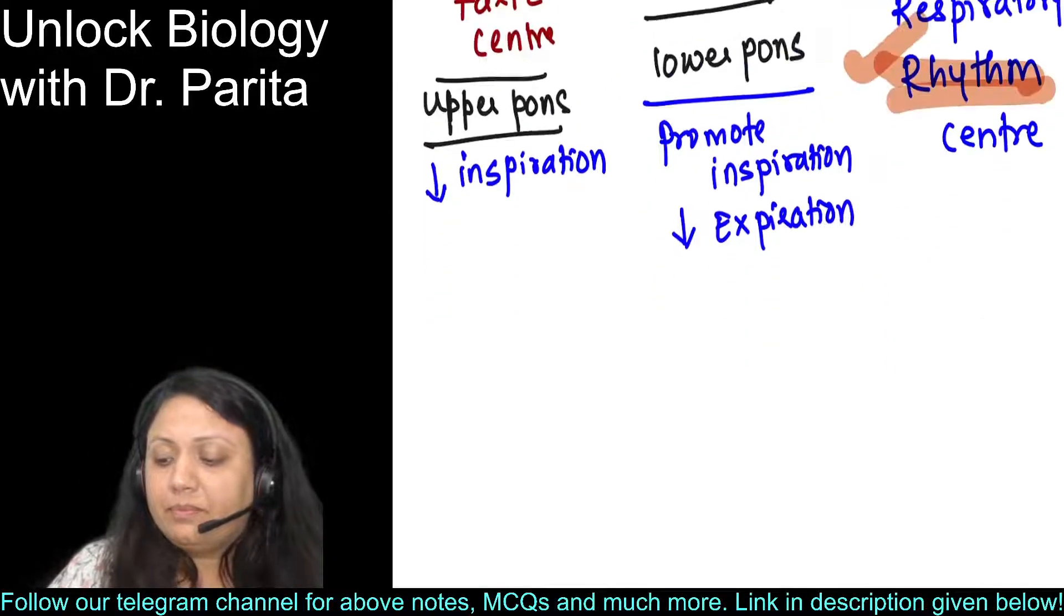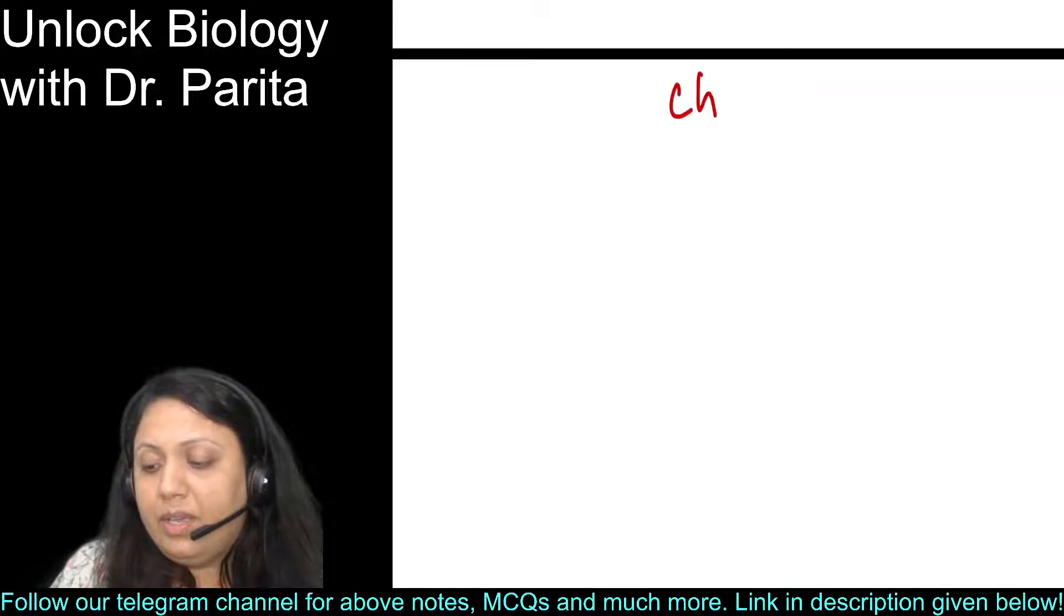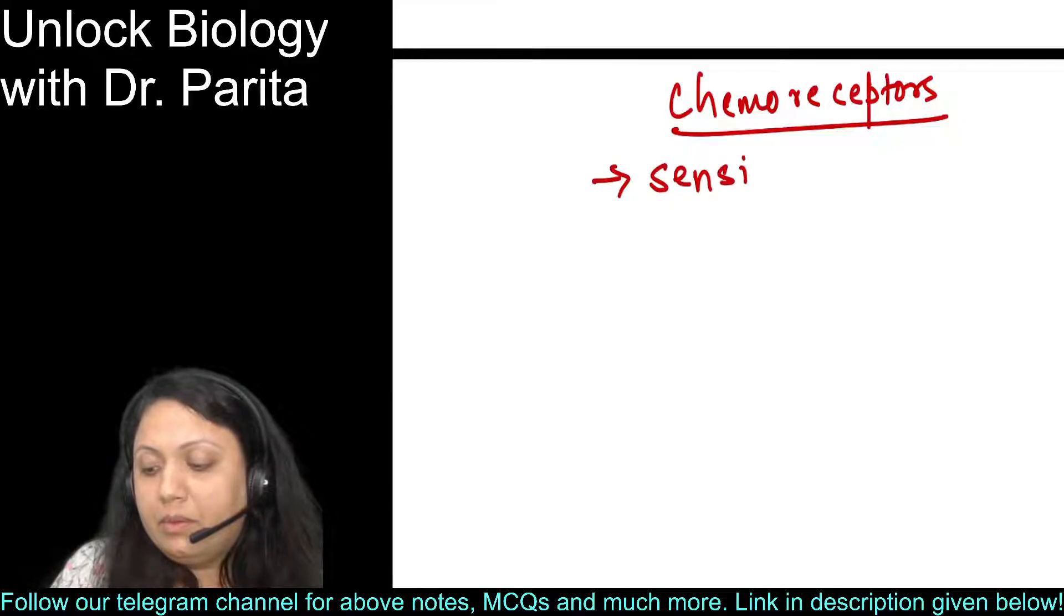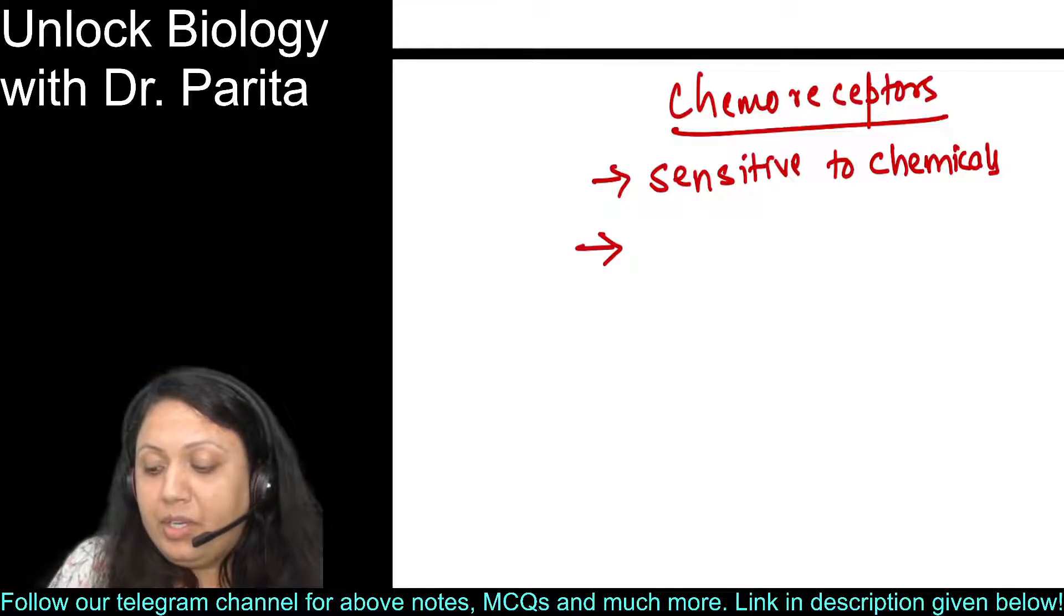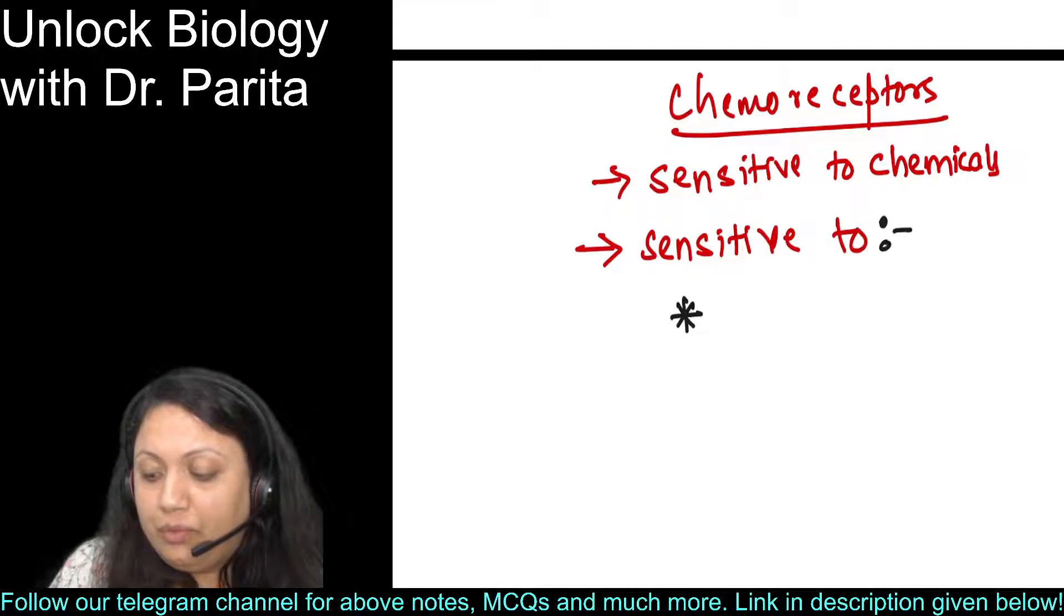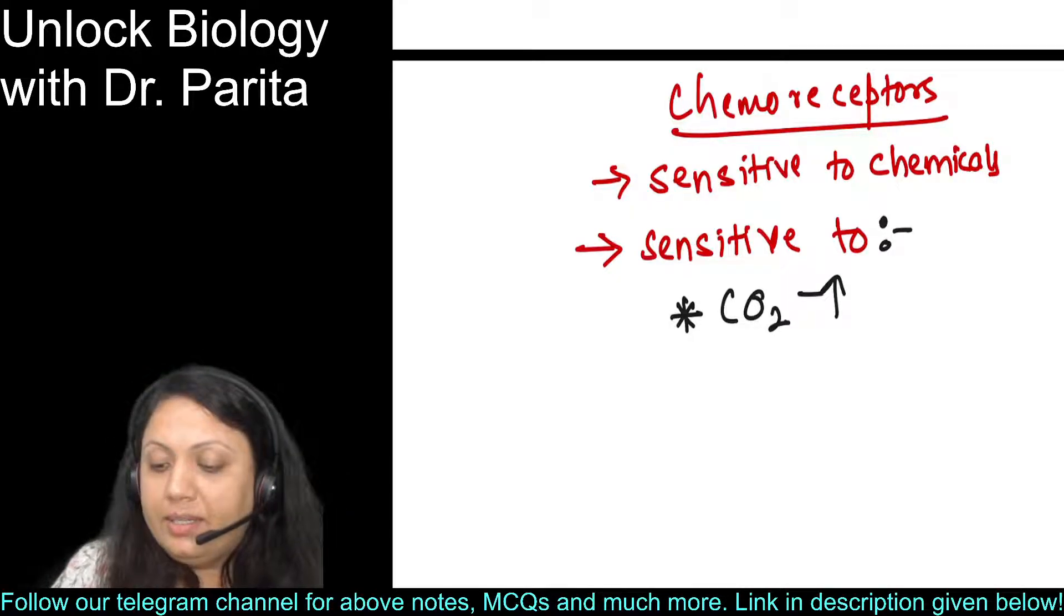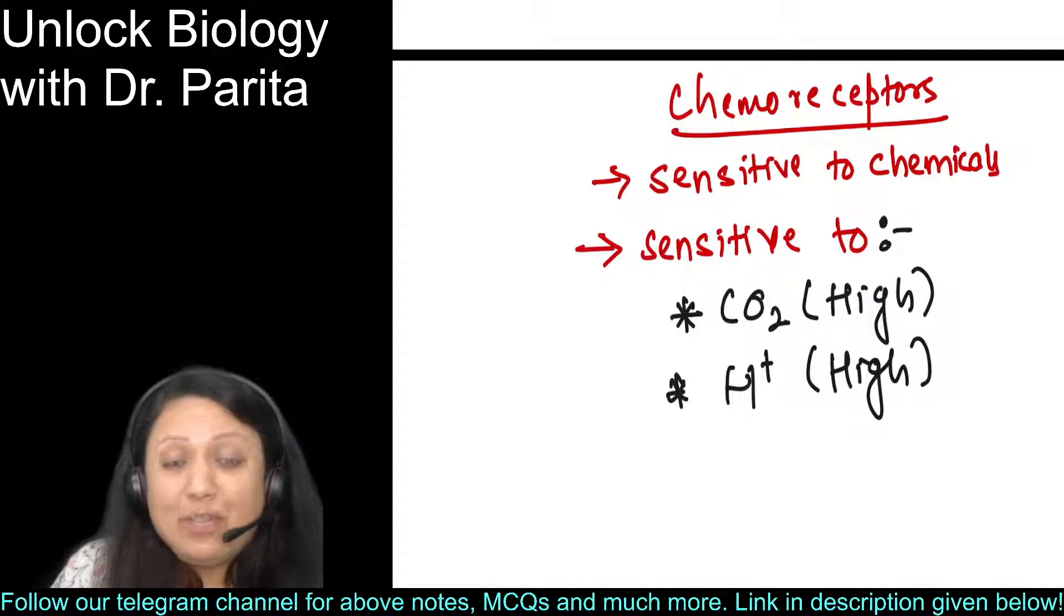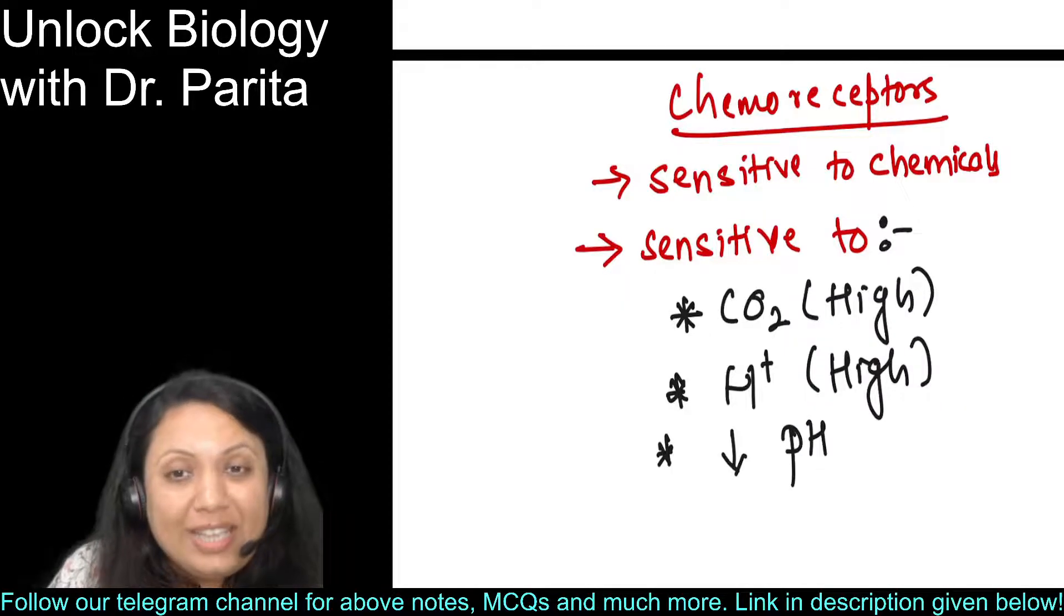After this, we come to chemical control or chemoreceptors. Why is this called chemoreceptors? Because it is sensitive to chemicals. Especially, it is sensitive to CO2 - high CO2. It is also sensitive to H+ - high H+. When I am talking about high H+, it simply means that it is sensitive to low pH.